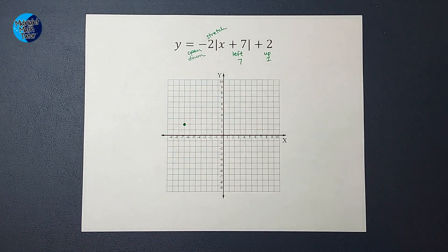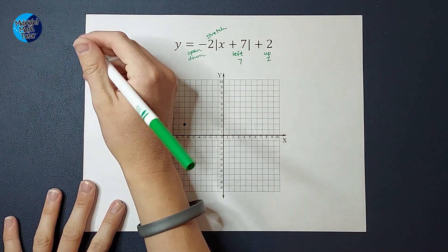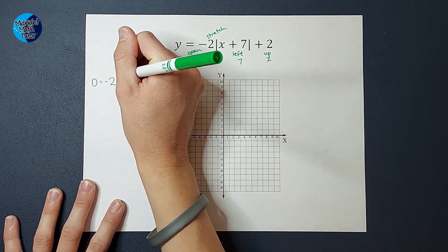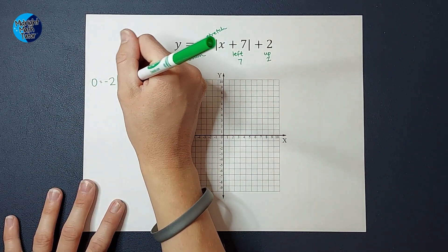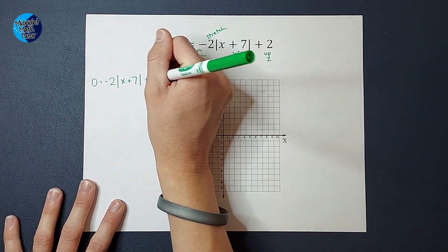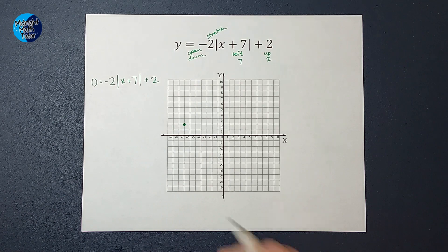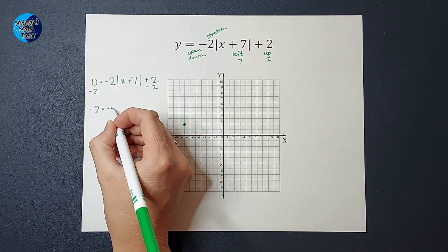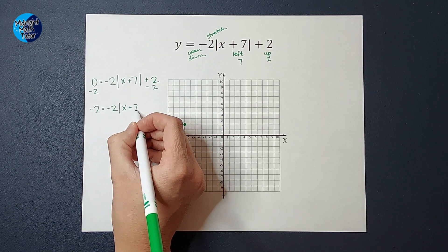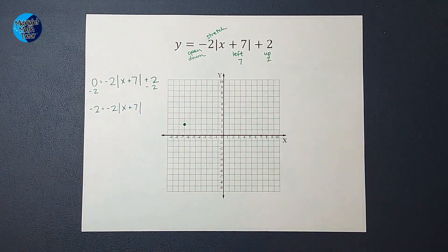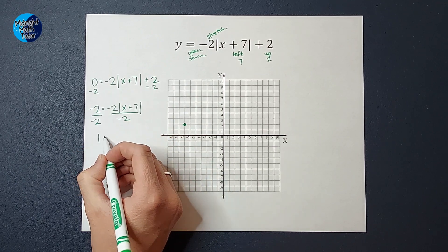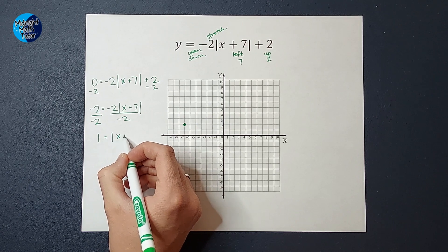To figure out where it crosses the x-axis, I'm going to plug in 0 for y. So I'm going to have 0 equals -2 times the absolute value of x + 7 plus 2. So we want x alone, so I'm going to subtract 2 from both sides. I have -2 equals -2 times the absolute value of x + 7. And then I'm going to divide that negative 2 off. So I end up with 1 equals the absolute value of x + 7.